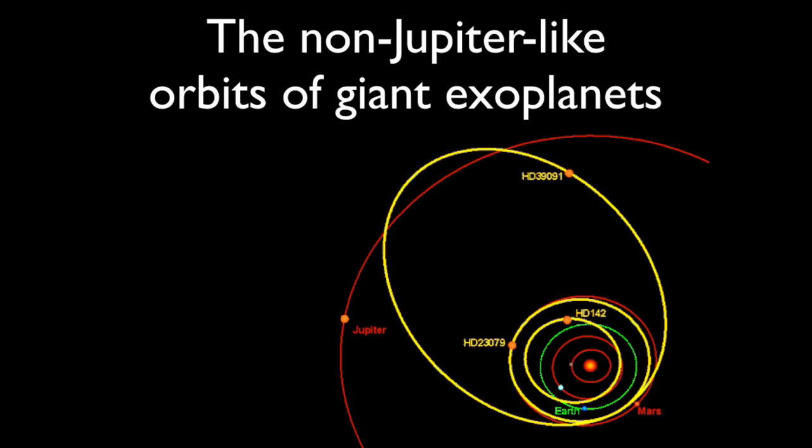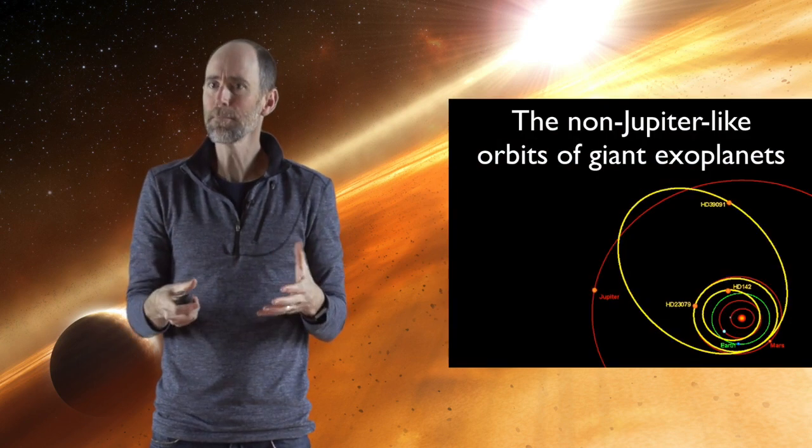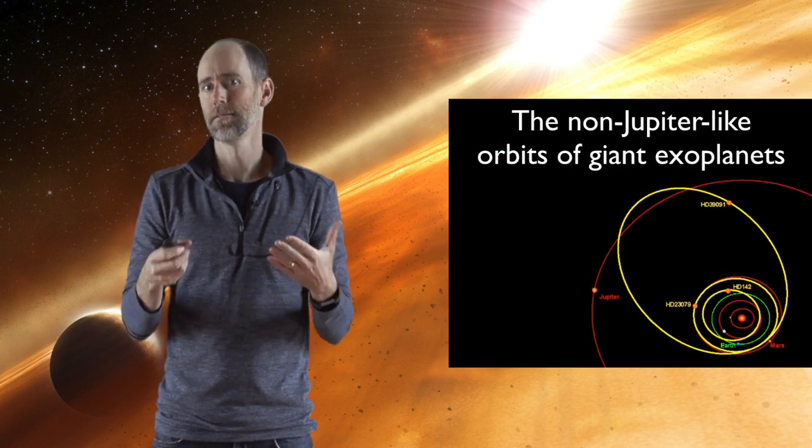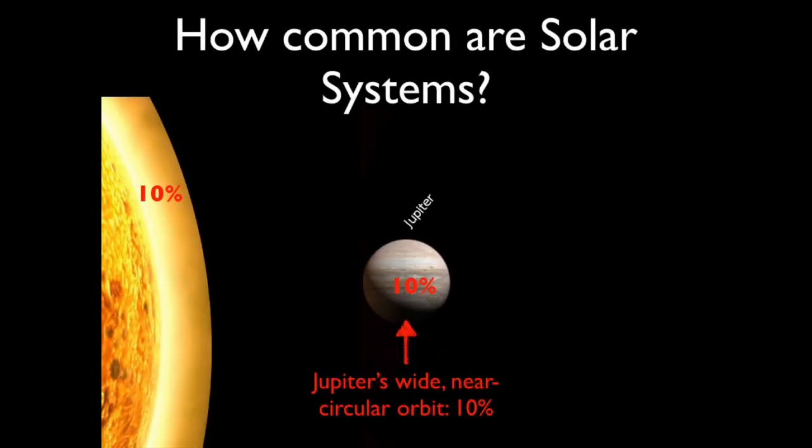The next question is: what are the odds of our Jupiter having an orbit like it does? What you see here in yellow are the orbits of giant planets around other stars. They often have very stretched out orbits or much smaller orbits than our Jupiter, shown in red. Only about 1 in 10 Jupiter-like planets have orbits like our Jupiter. The fact that our Jupiter has a wide, nearly circular orbit is about a 10% probability.